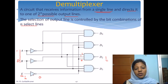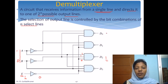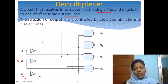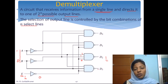You might ask: for this input, all other gates — D0, D1 — are also giving output 1. But that is not of our interest. Our interest is that D2 should get 1. We do not mind if D0, D1, D3 are also getting 1 as output. Our aim is that we should get 1 to D2.